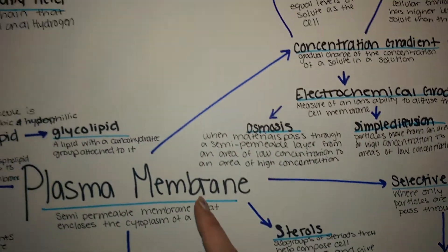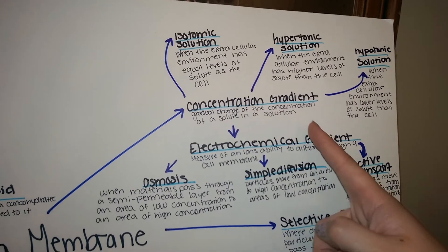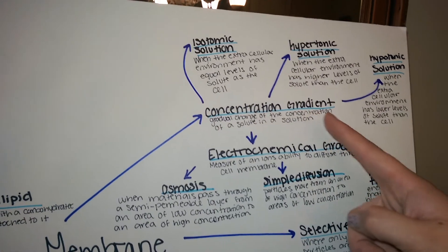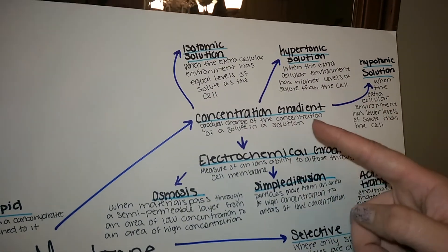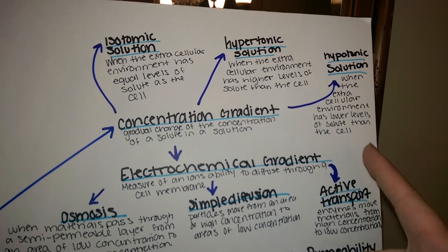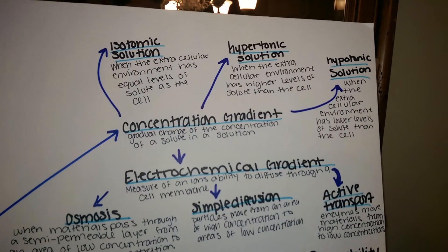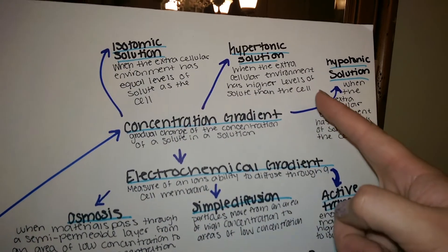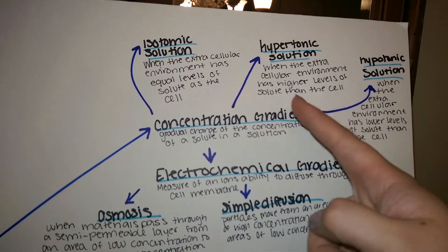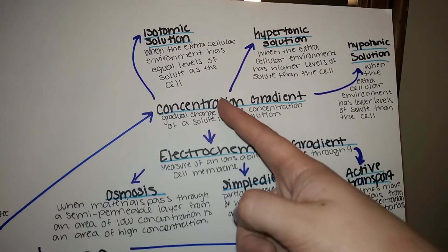Through the plasma membrane, you can look into concentration gradient, which is a gradual change in the concentration of a solute in a solution. There are three different kinds of solution: isotonic, hypertonic, and hypotonic. Hypotonic is when the extracellular environment has lower levels of solute than the cell, whereas hypertonic is when the extracellular environment has a higher level of solute than the cell. Isotonic is when the extracellular environment has equal levels of solute as the cell.